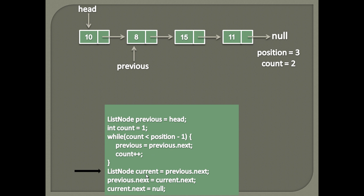We will create a temporary variable by name 'current'. This variable will hold the next node to previous. Our main objective is to delete the current node from the linked list and return it back.